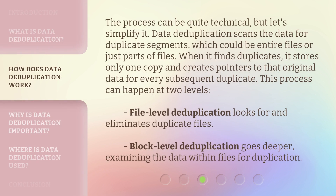The process can be quite technical, but let's simplify it. Data Deduplication scans the data for duplicate segments, which could be entire files or just parts of files. When it finds duplicates, it stores only one copy and creates pointers to that original data for every subsequent duplicate. This process can happen at two levels: file level deduplication looks for and eliminates duplicate files, while block level deduplication goes deeper, examining the data within files for duplication.